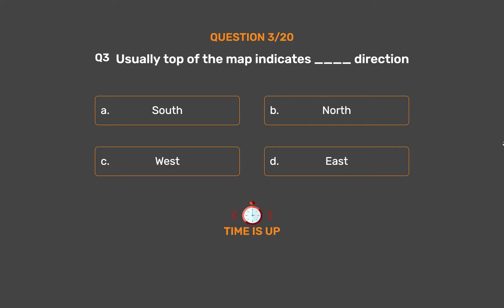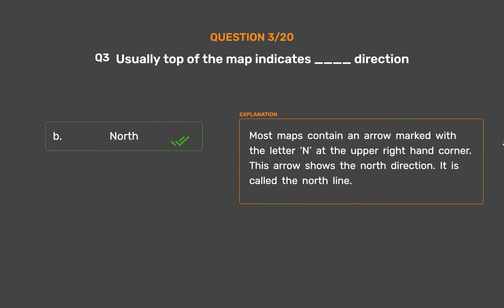The correct answer is Option B: North. Most maps contain an arrow marked with a letter N at the upper right-hand corner. This arrow shows the north direction. It is called the north line.